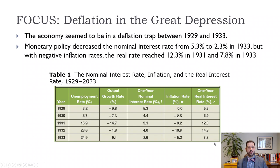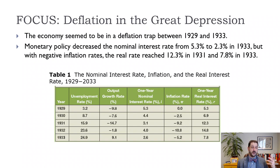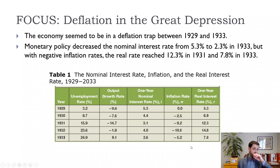So what's happening to the real interest rate? The real interest rate is the nominal interest rate minus inflation. Inflation is negative, so a minus a negative is a positive. Our real interest rate is climbing — by 1932 it's almost 15%. If you're looking to invest, borrow money, build a new factory, get a mortgage, your real interest rate is really high. There's no incentive to do that. Output keeps falling and it doesn't really start to recover until 1934.